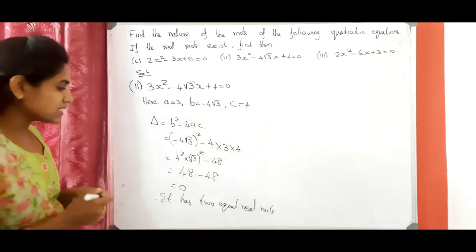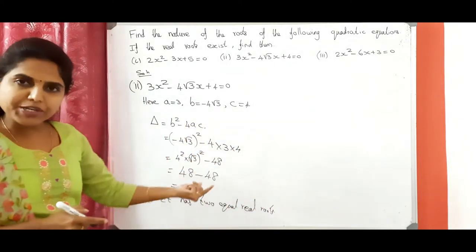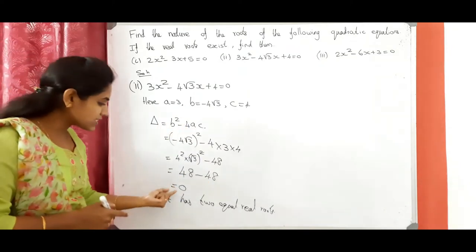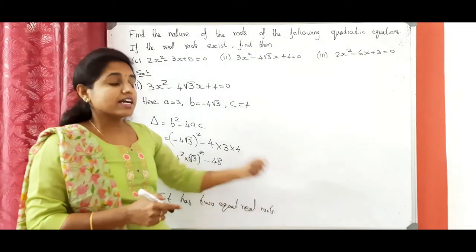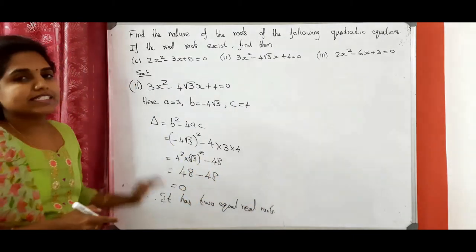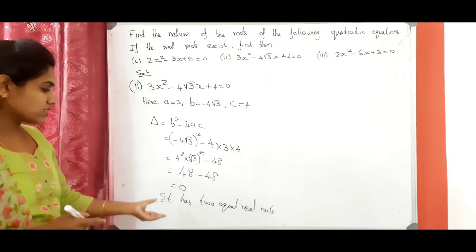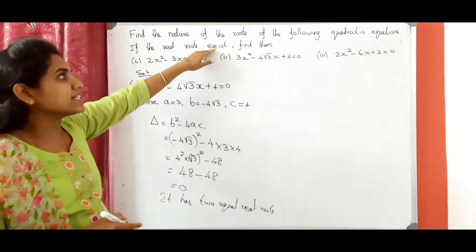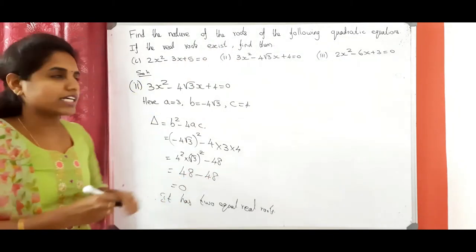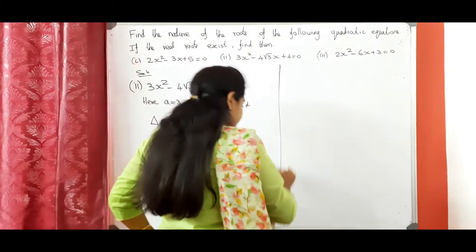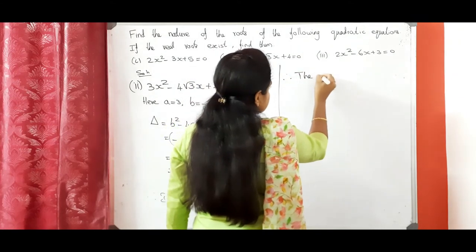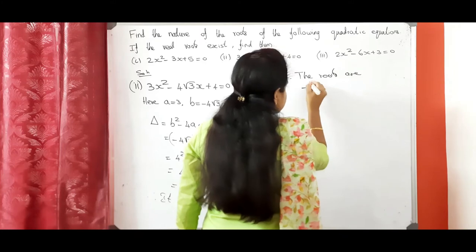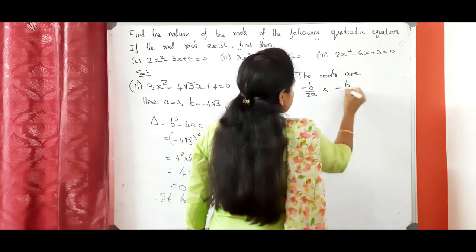So b squared minus 4ac negative means no real roots, equal to 0 means two equal real roots, and positive means two distinct real roots. Now we got two equal real roots, so the real roots exist. We need to find the roots also. Therefore, the roots are minus b by 2a and minus b by 2a.